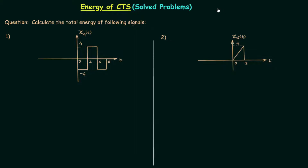In the previous lecture we solved three problems based on the energy of continuous time signals. All three problems were special and we obtained three conclusions. The first conclusion was that the energy of an infinite converging signal is going to be finite, and thus signals which are infinite converging are energy signals having power equal to zero.